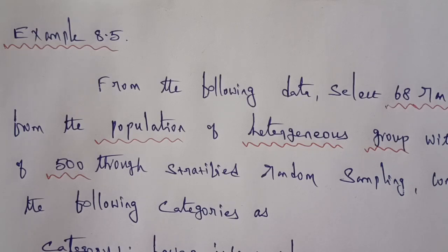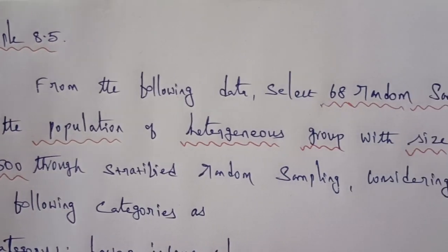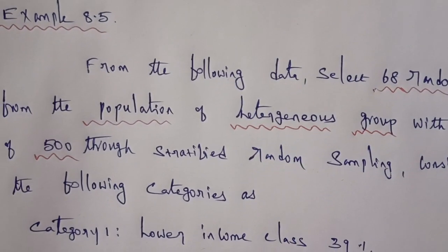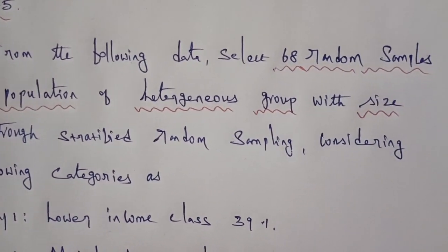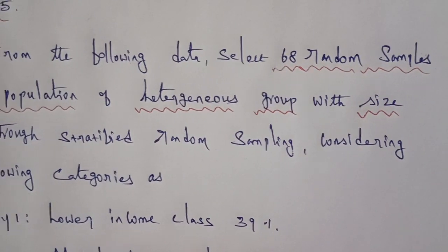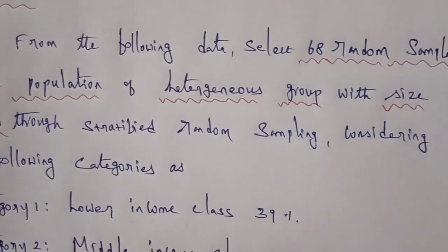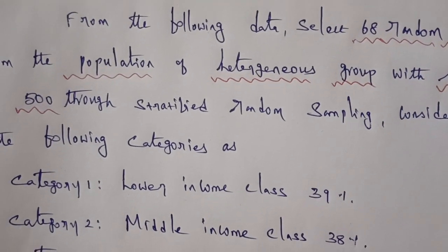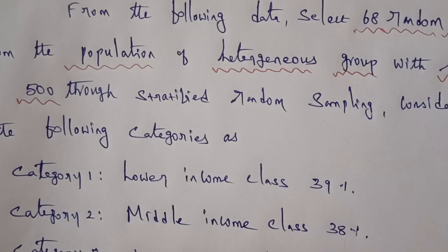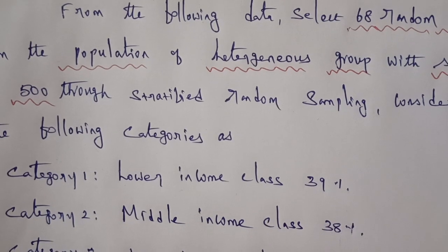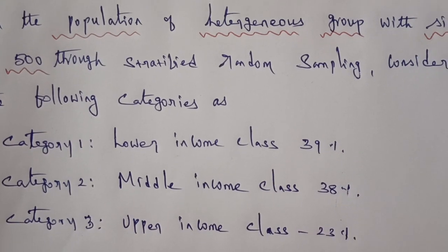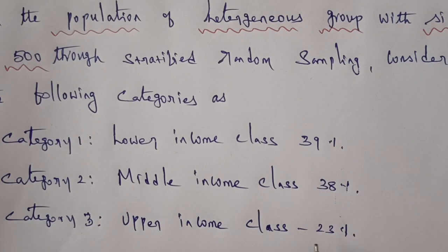Example 8.5. From the following data, select 68 random samples from the population of hitters in his group with size of 500 through random sampling, considering the following categories: category 1 is lower income class at 39%, category 2 is middle income class at 38%, and category 3 is upper income class at 23%.